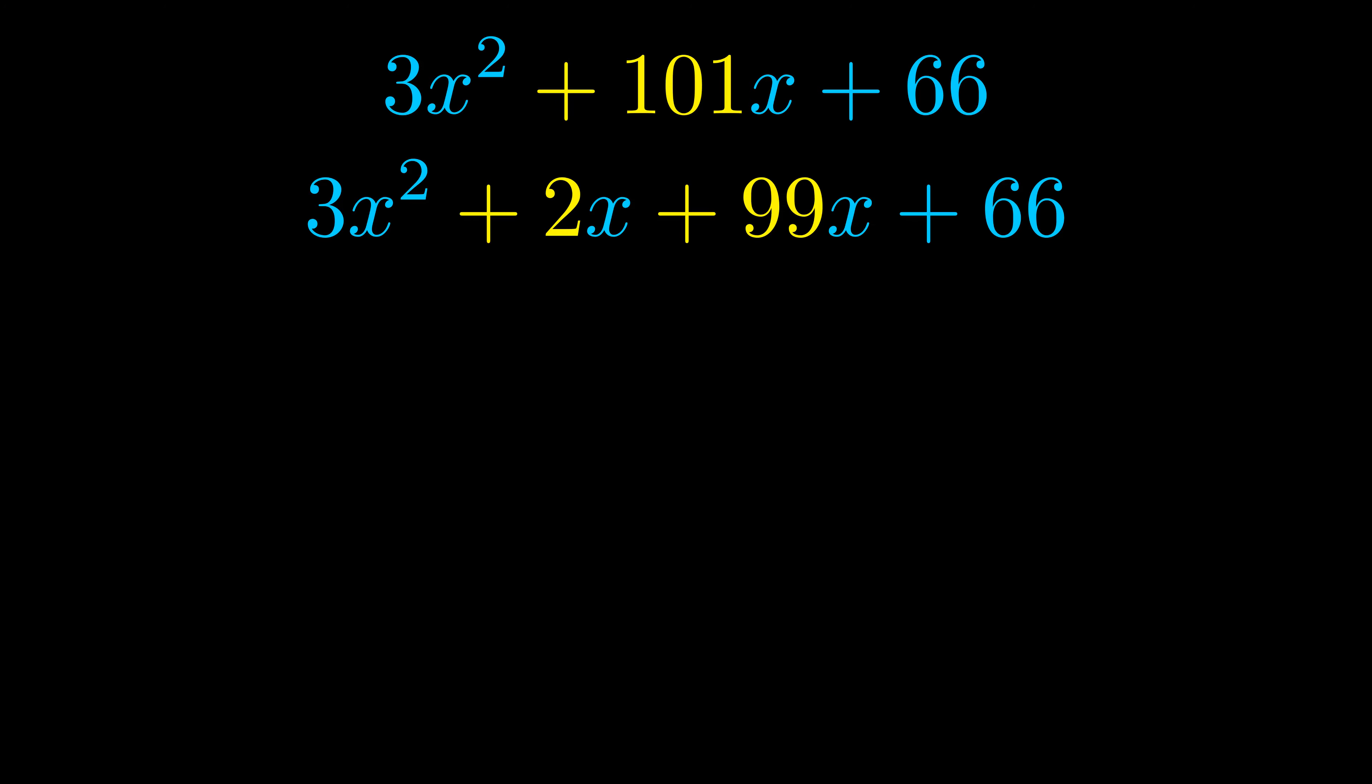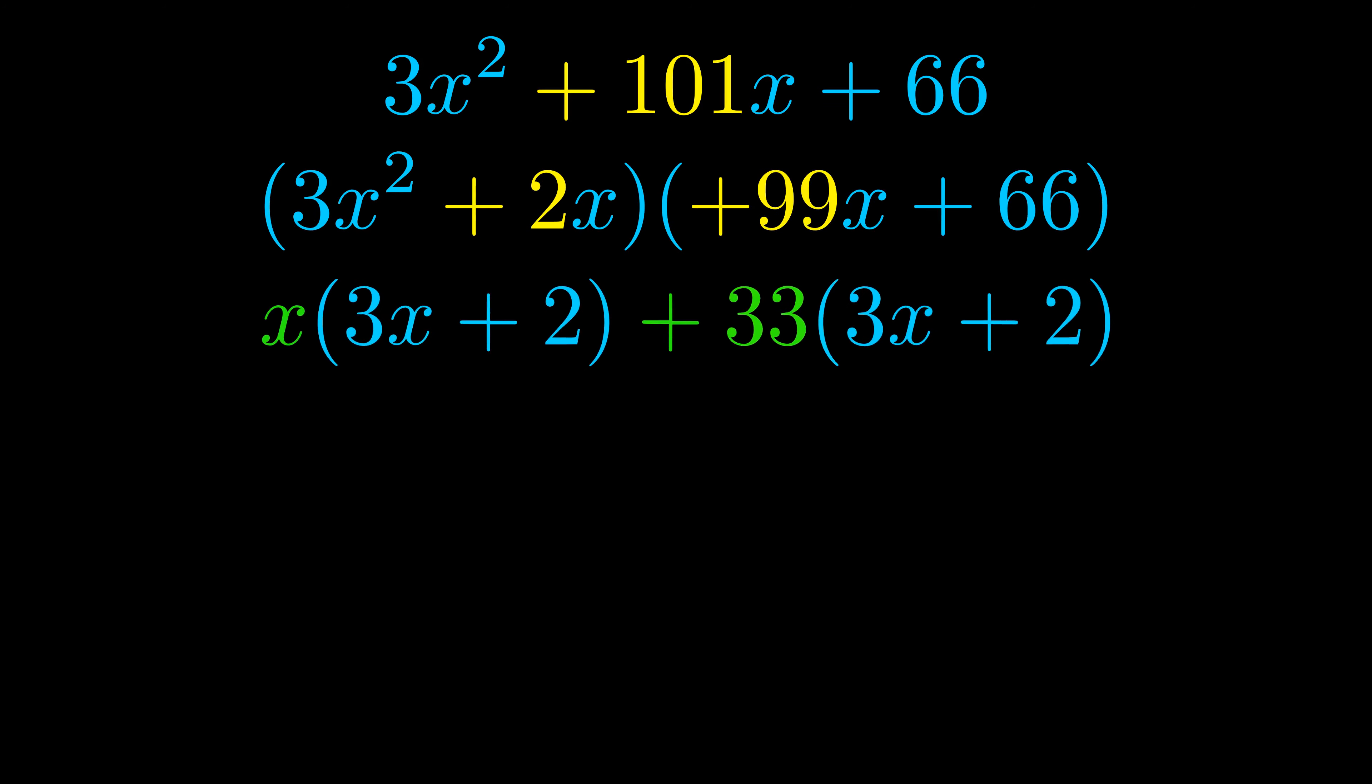Once we've done this, we go ahead and put parentheses around the first term and the last term, and we do that so that we can take the greatest common factor out of both terms. We can see the greatest common factor is now outside in green.